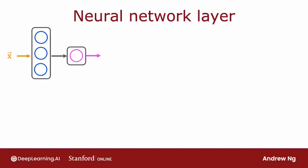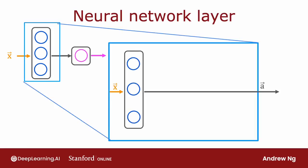Here's the example from the demand prediction example, where we had four input features that were fed to a layer of three neurons in the hidden layer, which then sends its output to an output layer with just one neuron. Let's zoom in to the hidden layer to look at its computations.